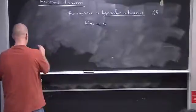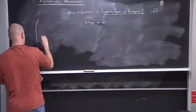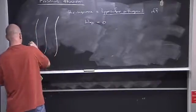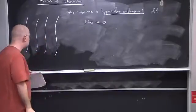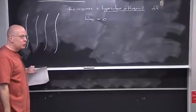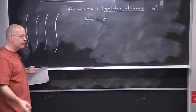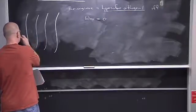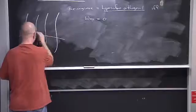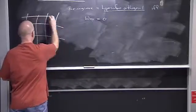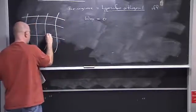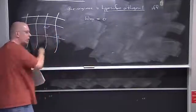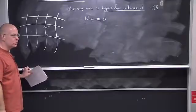What does it mean? Well, we're given a congruence. The congruence will be hypersurface orthogonal if you can construct a whole sequence of hypersurfaces such that at any point, the tangent vector field to the congruence happens to be a normal vector to those hypersurfaces.